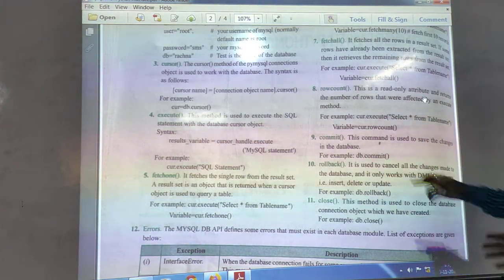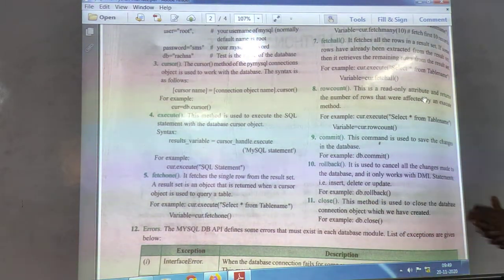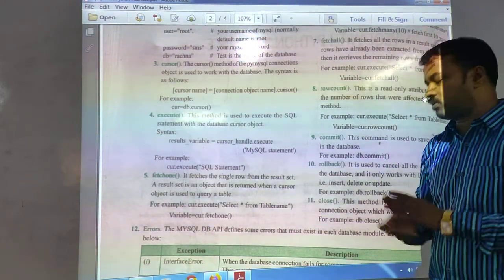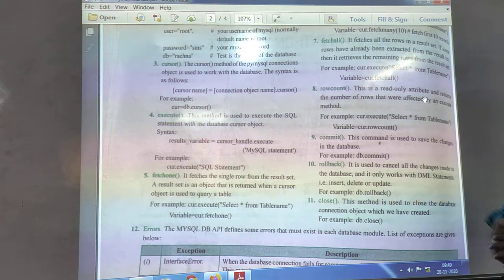You write for example, db.commit. DB, you know that, it's the database name. And after that you write the commit method to execute or update something from the database section.